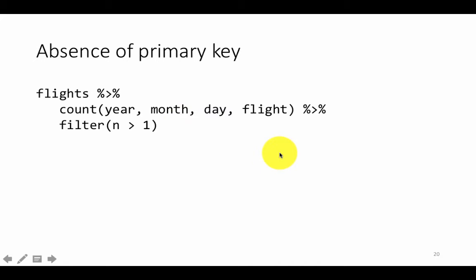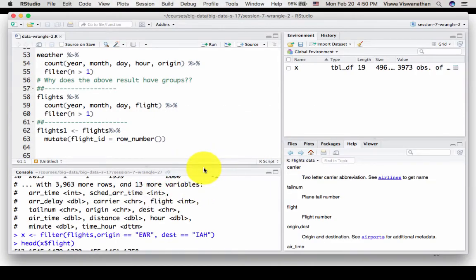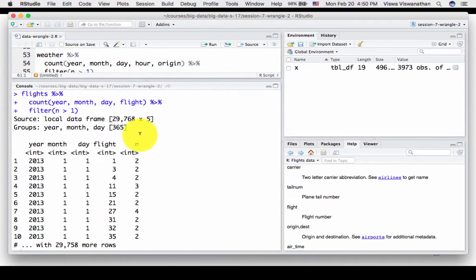If you filter where n is greater than one, you find that there are almost 30,000 such cases where the same flight number has multiple occurrences on the same day. I have actually run that query, and we find that there are 29,768 rows where this actually occurs.